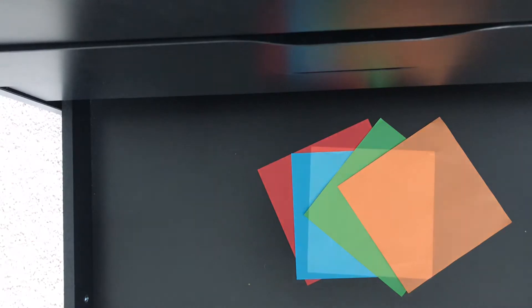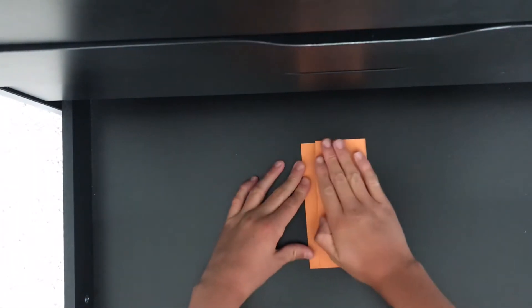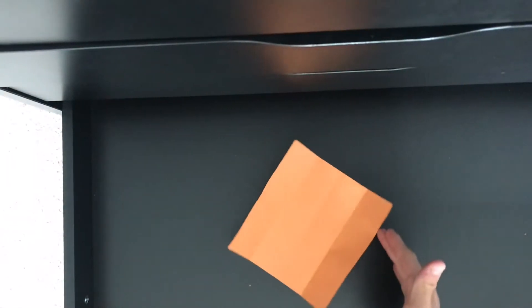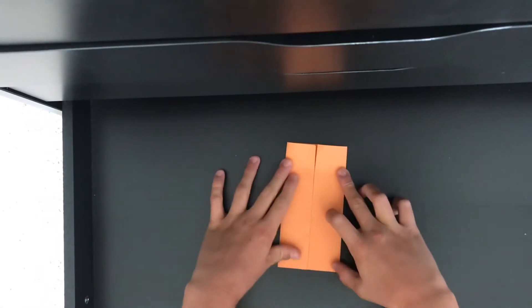The first thing you need to do is fold the paper in half, exactly in half. Make these outer sides go to the middle, to the middle crease.